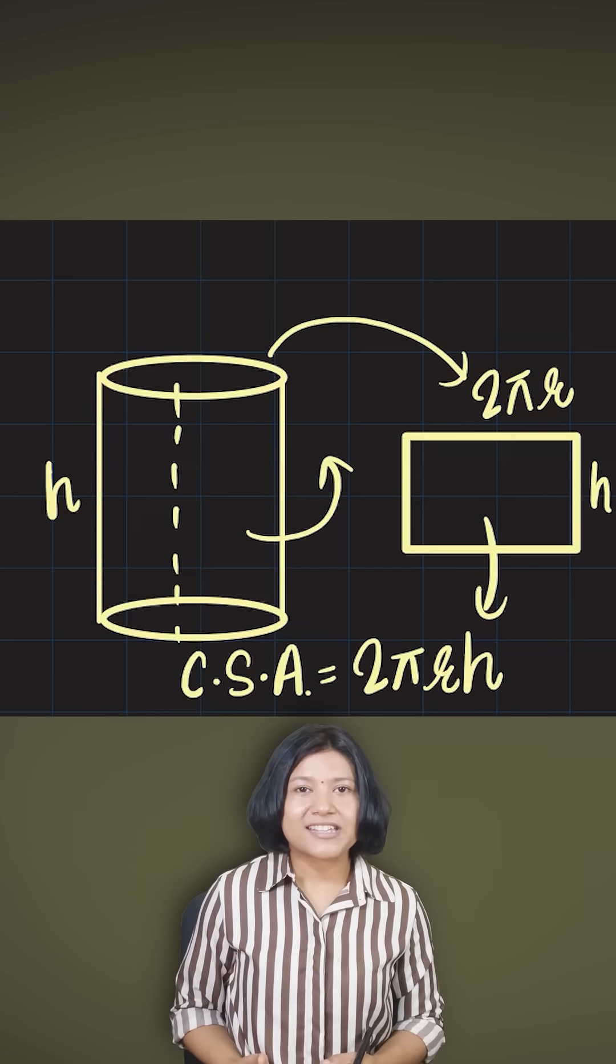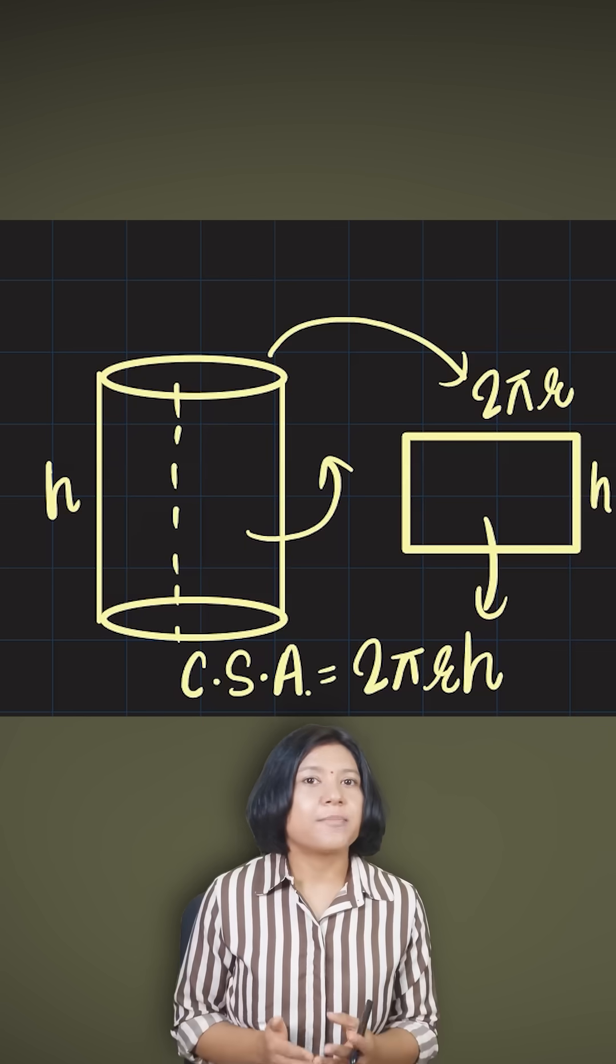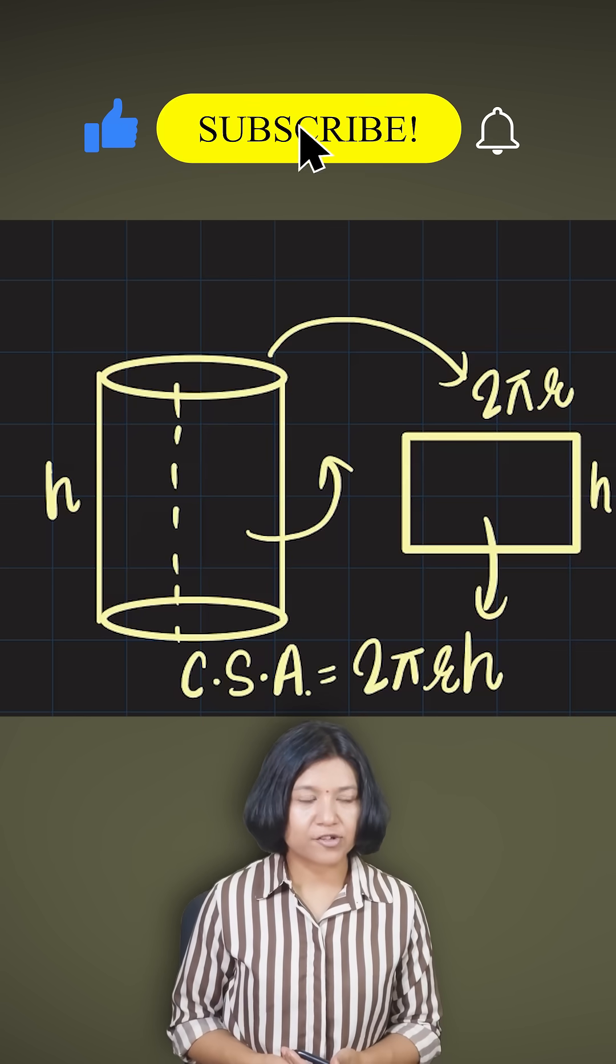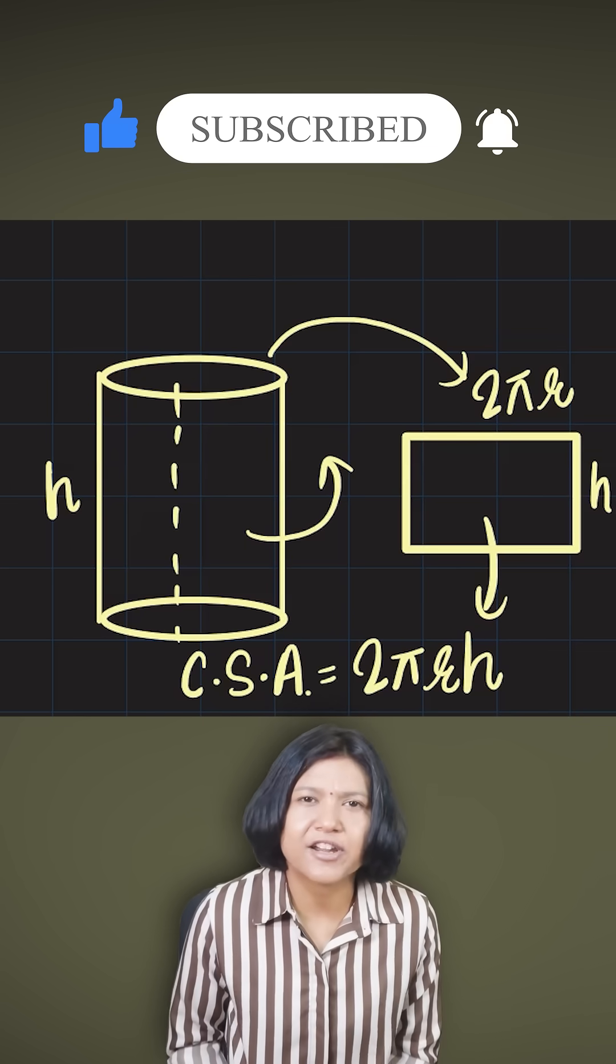What we are actually doing is taking the perimeter of the base, in this case the circumference of a circle, and multiplying it with the height. Very simple.